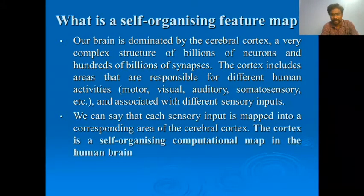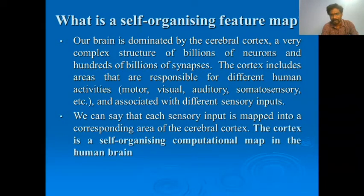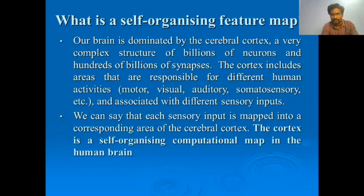The cortex is a self-organizing computational map in the human brain. We have millions to billions of neurons, each one connected and mapped with the cerebral cortex to perform respective functionalities. That self-organizing structure is what is obtained in the Kohonen network.